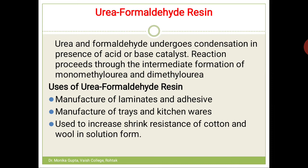The next is urea-formaldehyde resin. As the name indicates, urea and formaldehyde condense, which can occur in the presence of acid or base. The intermediates formed are monomethylol urea and dimethylol urea, which then condense together. Adding more formaldehyde and urea repeatedly finally gives urea-formaldehyde resin.